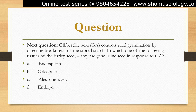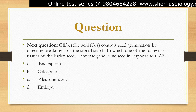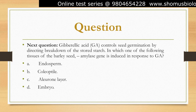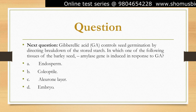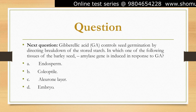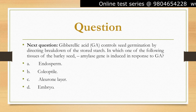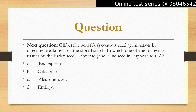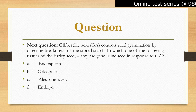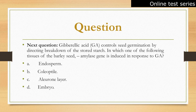The glucose and maltose are then transported to the embryo and used as a source of energy for growth and development. The coleoptile (option B) is a structure that protects the emerging shoot of the germinating seed and helps it emerge from the soil. The embryo (option D) is the developing plant inside the seed, while the endosperm (option A) is a tissue that provides nutrients for the developing embryo.